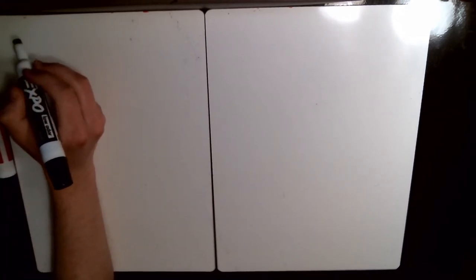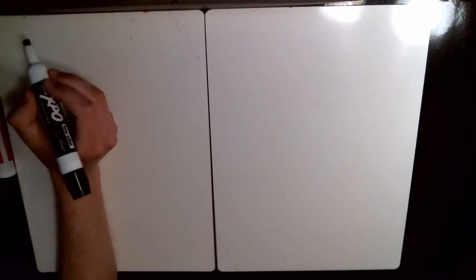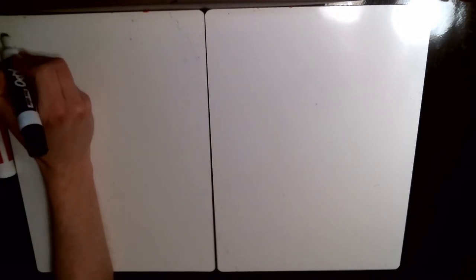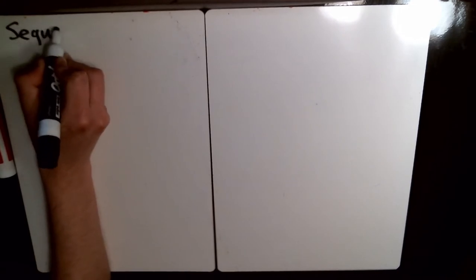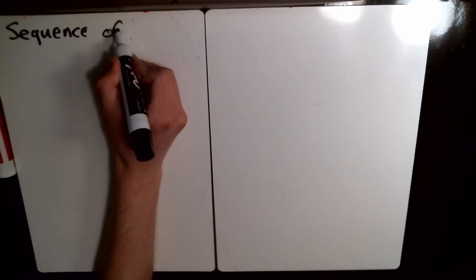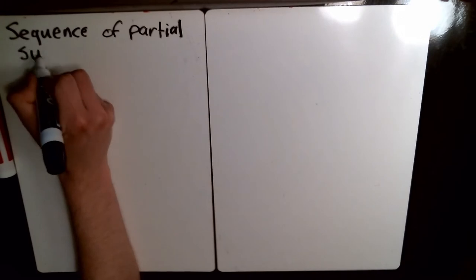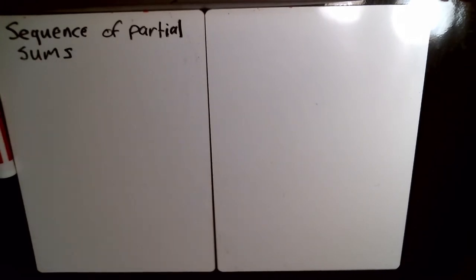In the last video, we had found formulas for the nth term of sequences. In this video, we're going to be looking at a new type of sequence, which is called the sequence of partial sums.